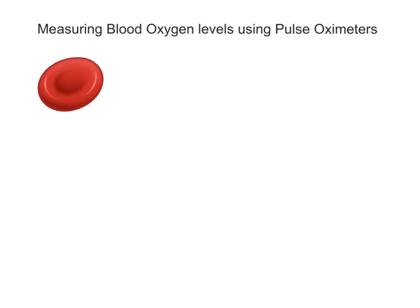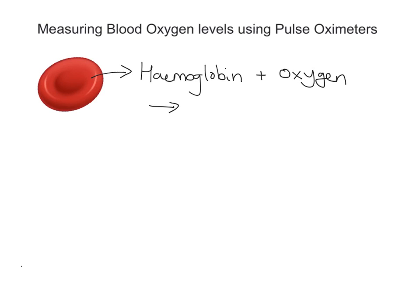What we've got here is a picture of a red blood cell. The red blood cell contains a chemical called hemoglobin, and hemoglobin combines with oxygen. You can actually write a chemical word equation for this: hemoglobin plus oxygen — hemoglobin, the pigment inside the red blood cell — forms something called oxyhemoglobin.